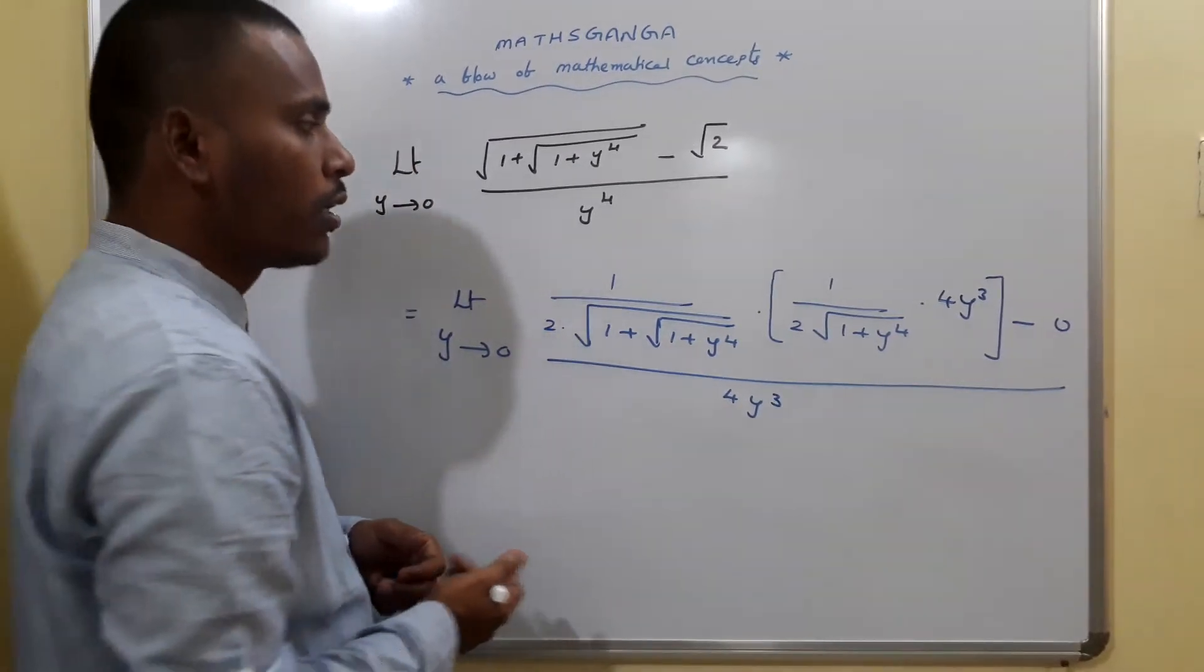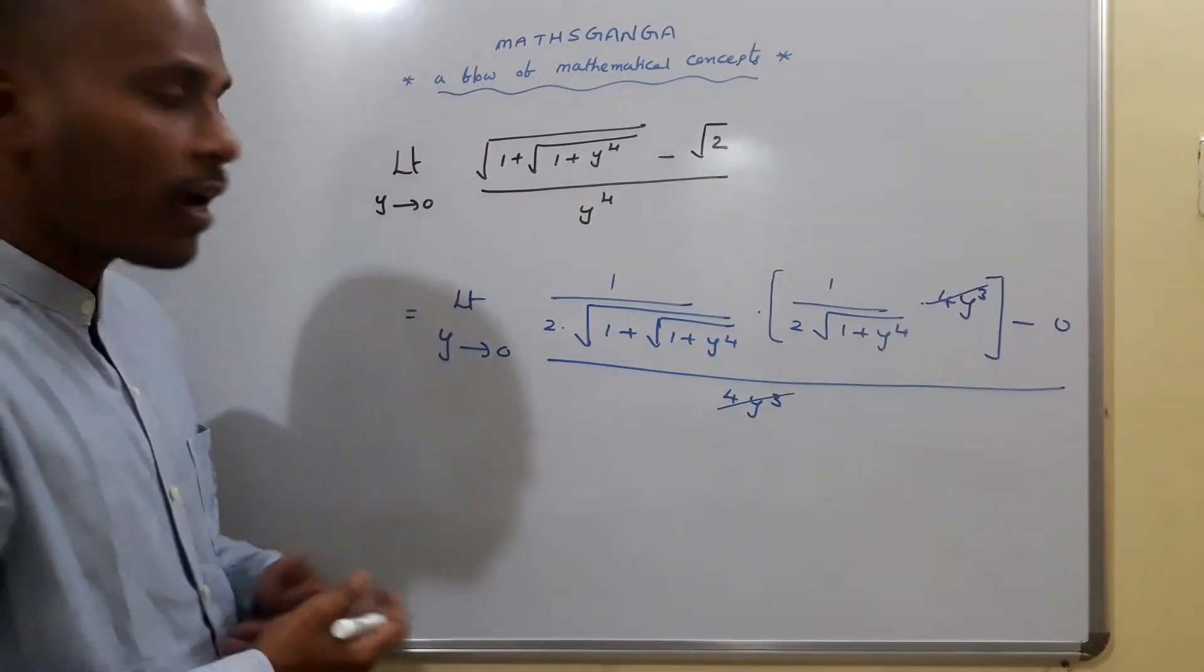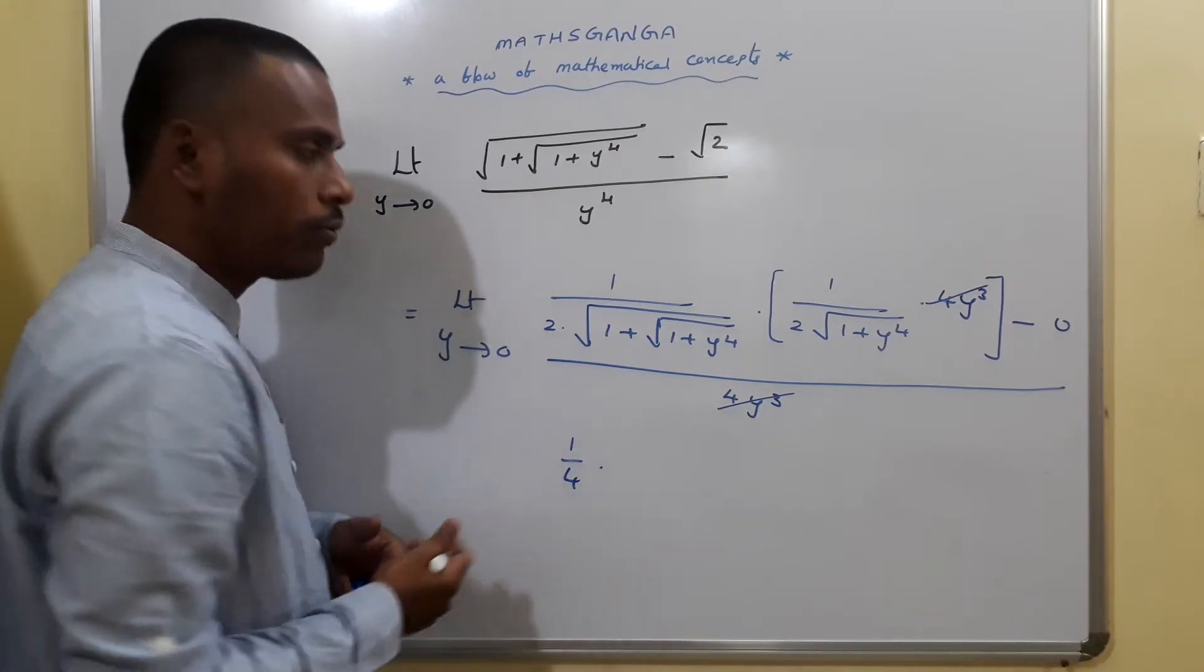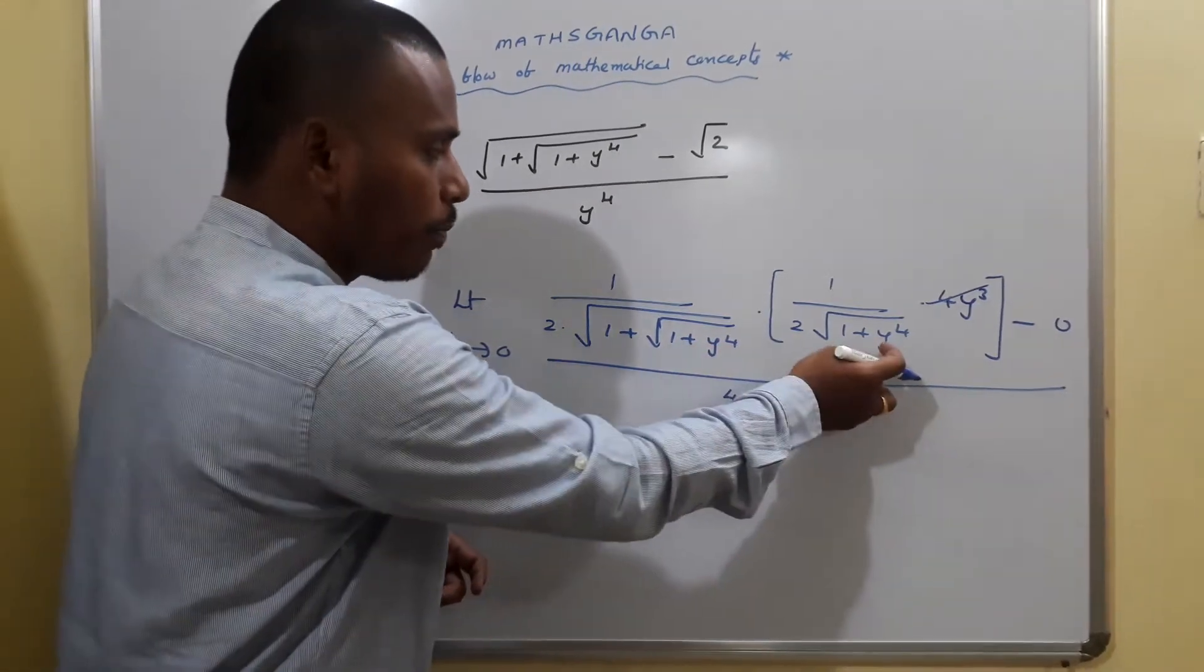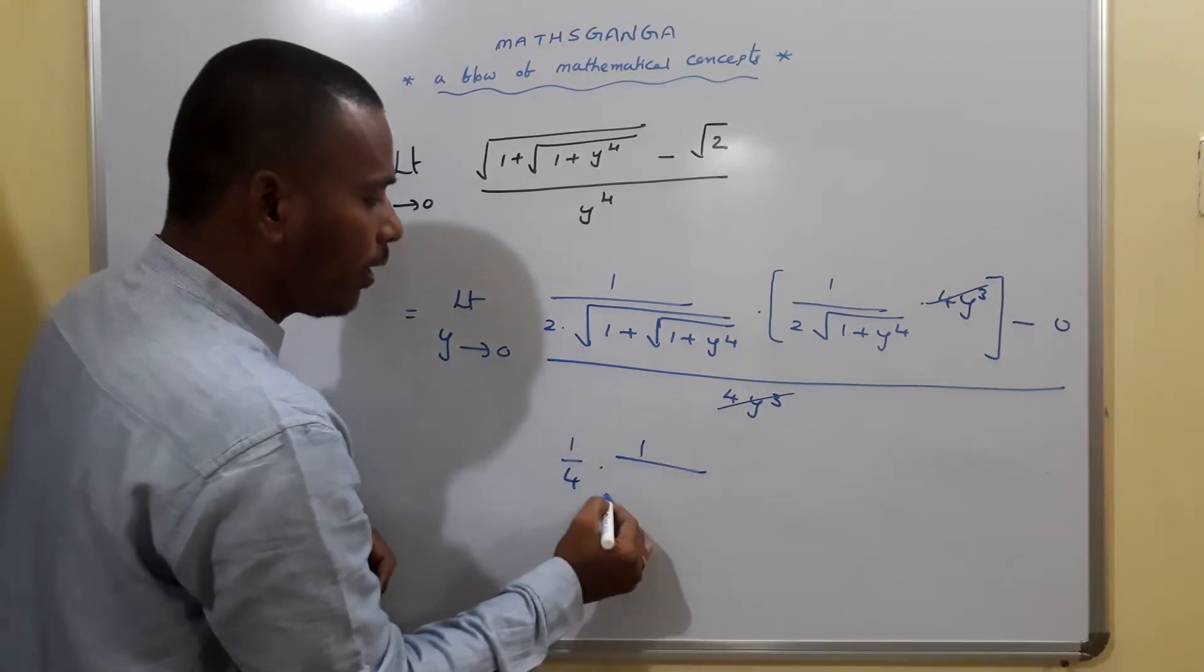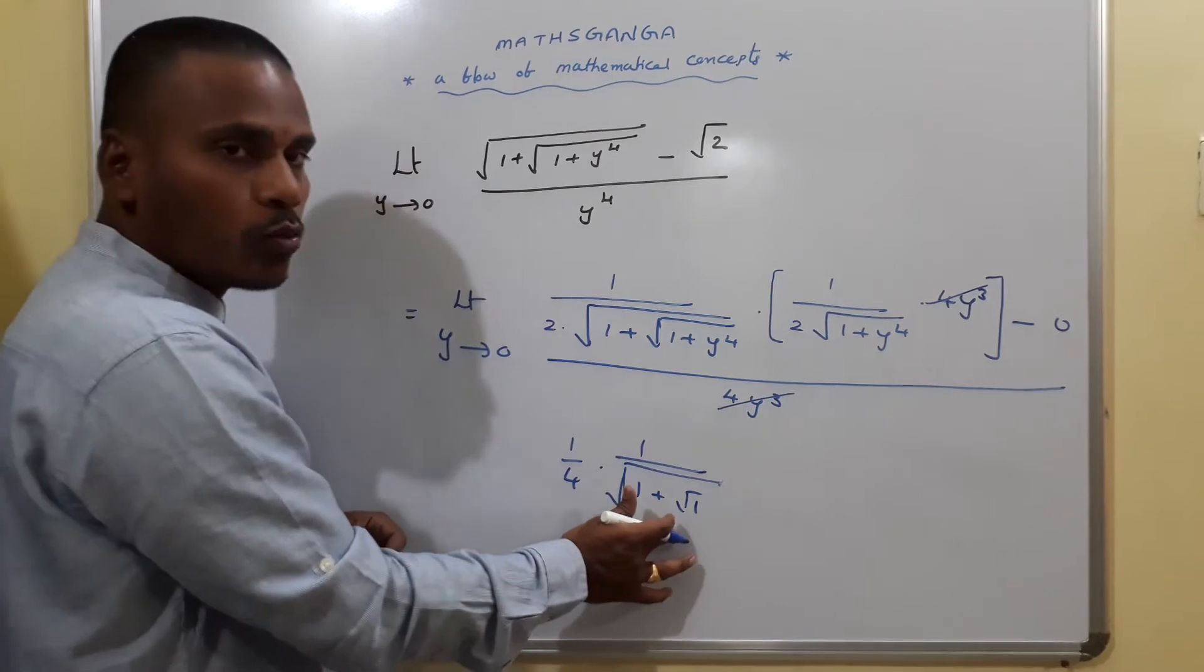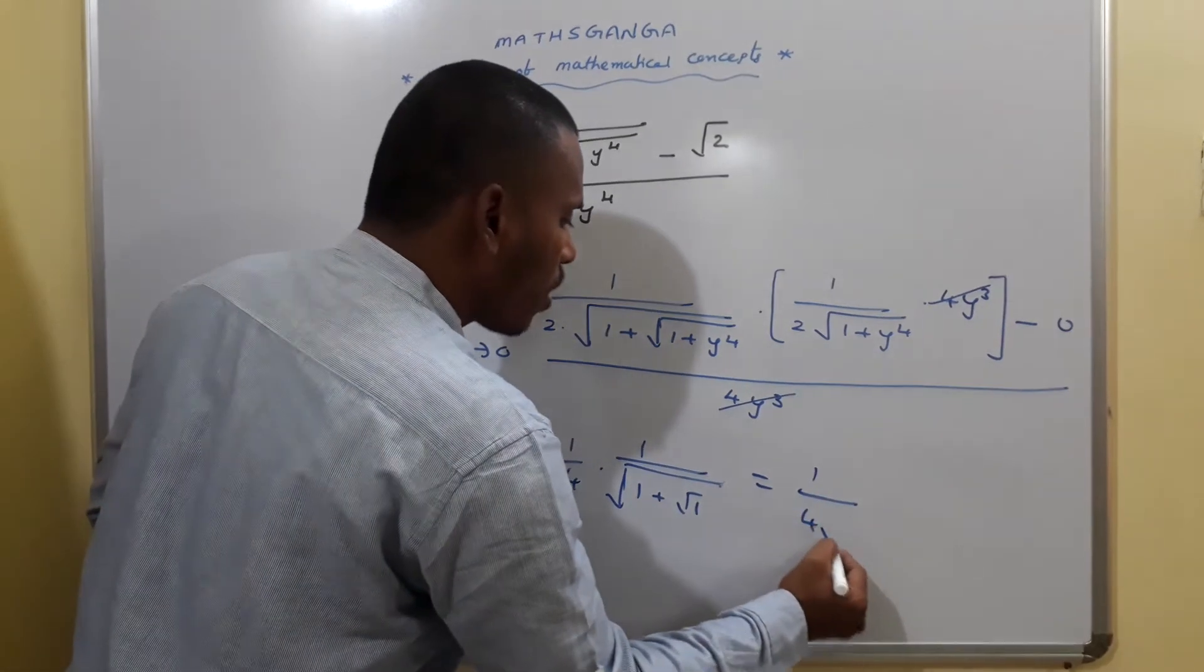Now how can we solve? See, this 4y cube and 4y cube will get cancelled, and finally what we have: 2 into 2 is 4, 1 by 4 into replacing 0 instead of y. If we replace 0 here, root of 1 plus 0 is 1, so there is now 1 plus 0 here, 1 by root of 1 plus root 1. Root 1 is 1, 1 plus 1 is 2, root 2.